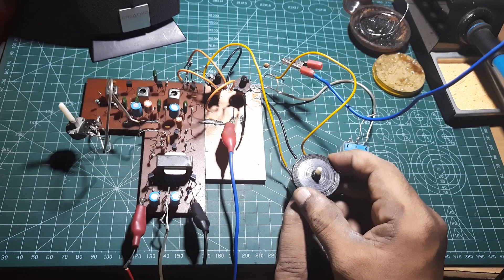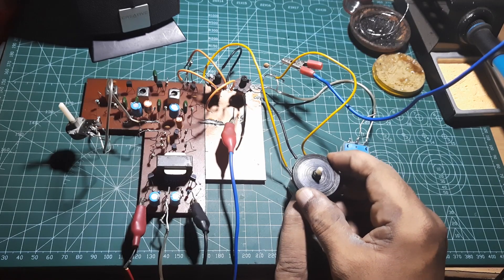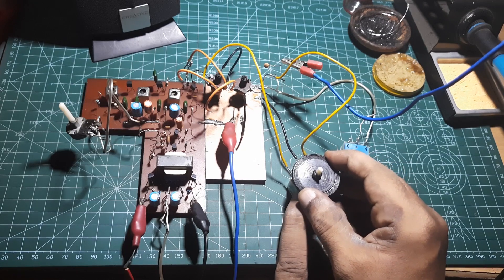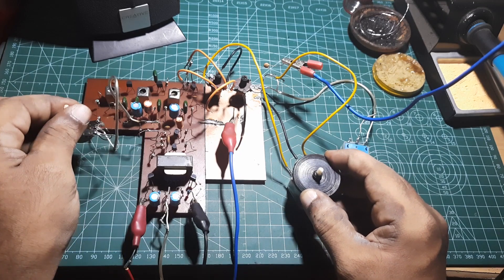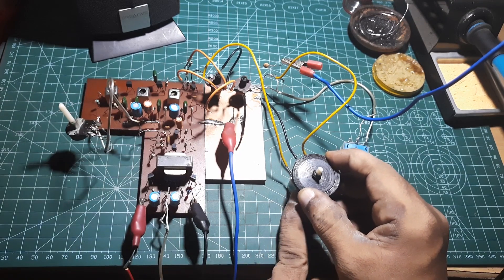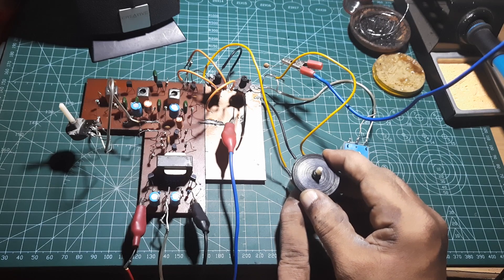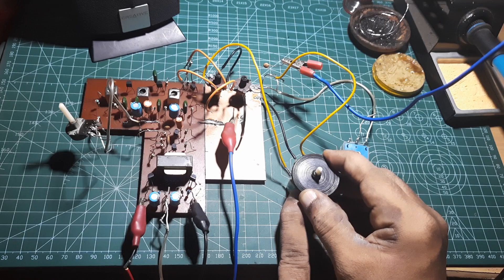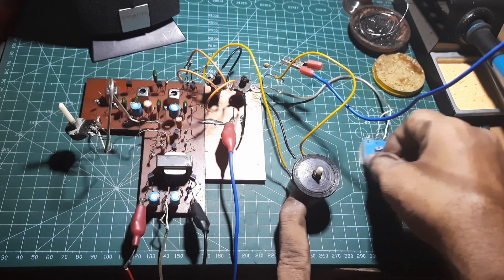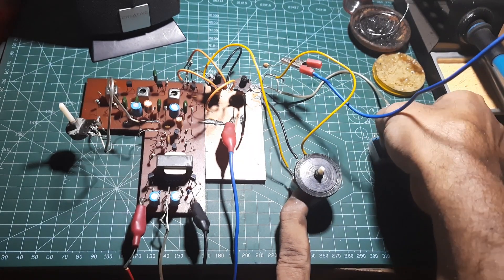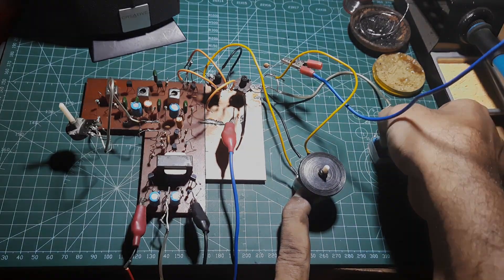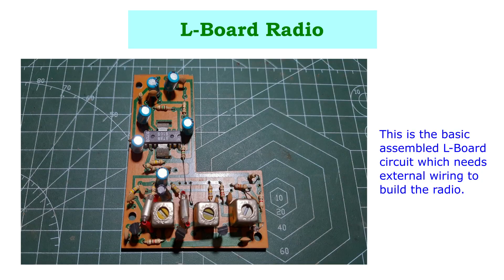Welcome to my channel Image Radio Universe. Today in this video I am going to talk about the superheterodyne radio receiver using the once popular L board radio. This is an L board radio to which external radio components are wired in place to build a radio receiver. You can use this radio to tune to different local and international broadcast radio stations. The radio can be tuned to different frequencies on bands such as medium wave, short wave, etc. Let us build the circuit and make this radio live once again.